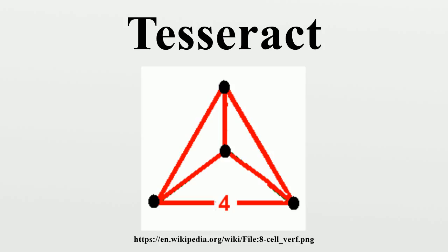The tesseract, along with all hypercubes, tessellates Euclidean space. The self-dual tesseract honeycomb consisting of four tesseracts around each face has Schläfli symbol 4,3,3,4. Hence, the tesseract has a dihedral angle of 90 degrees.